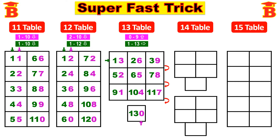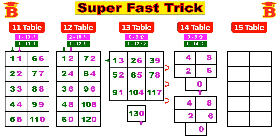Next let us write the 14th table. First step: write even numbers 0 to 8, starting from the bottom. So this is 0 and then even numbers 2, 4, 6, 8. Same we repeat here also: 0, 2, 4, 6, 8. Next second step: write 1 to 14. See the arrow mark — horizontally write 1, 2, skip 3 and write 4, then 5, skip 6 and write 7. Next 8, 9, skip 10 and write 11, 12, skip 13 and write finally 14.